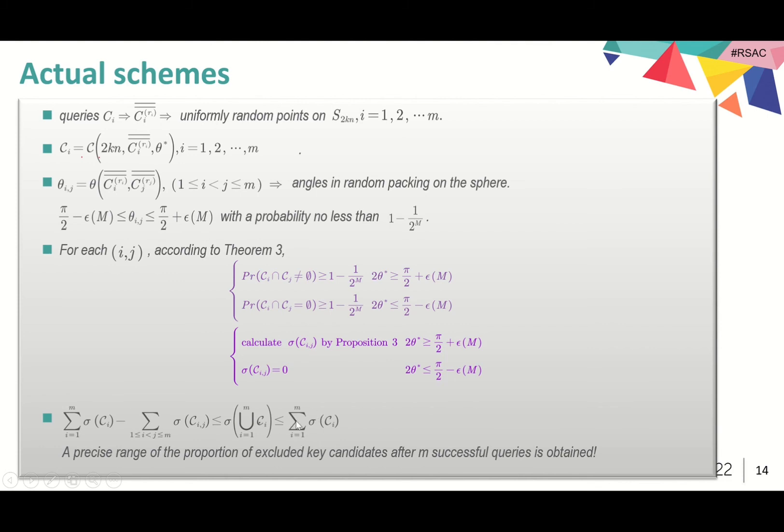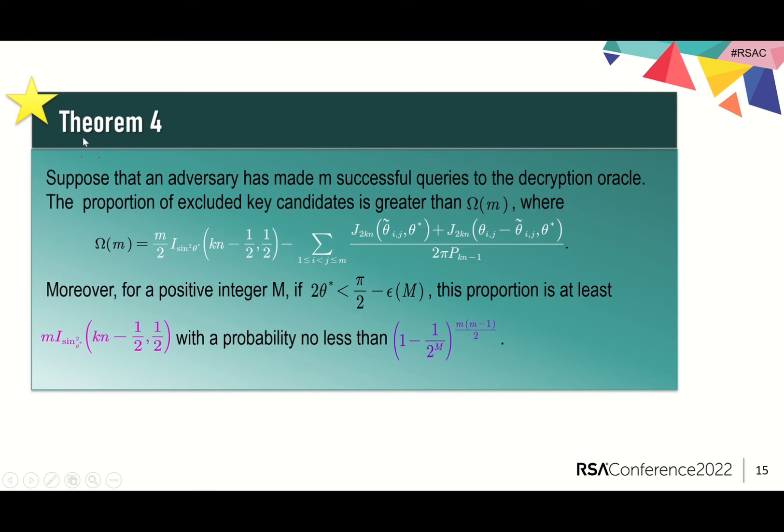A first-order approximation gives its upper bound, and the second-order approximation gives the lower bound. In summary, we get Theorem 4. Suppose that an adversary has made m successful queries to the decryption oracle. The proportion of key candidates is greater than omega(m). The function omega is defined by the incomplete beta function I and function J.